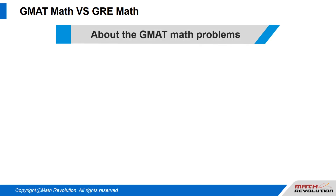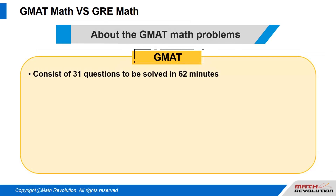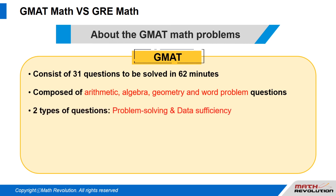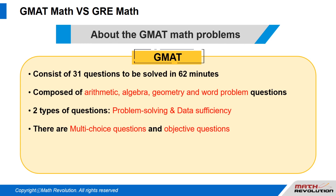About GMAT math problems: the GMAT math test consists of 31 math questions that must be solved within 62 minutes. The exam is composed of arithmetic, algebra, geometry, and word problem questions. There are also problem-solving questions, data sufficiency questions, and data interpretation questions. There are both multiple-choice questions and objective questions. Logic-based questions are more concentrated on the GMAT.